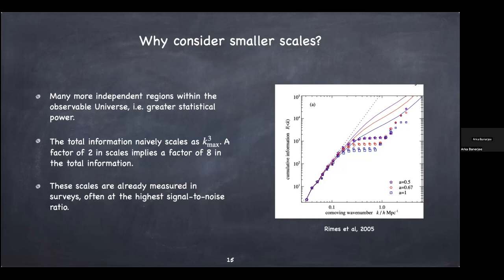Putting this into numbers, the total information scales as k_max cubed, where k_max is the wavenumber — essentially 1 over the length scale. If you go down by a factor of 2 in length, you get 8 times more information. Furthermore, these scales are already measured in surveys — surveys already have this information on small scales. The theory and modeling needs to catch up. In fact, the highest signal-to-noise ratio is around 1 megaparsec for most surveys, so existing cosmology analyses have been throwing out a lot of information.